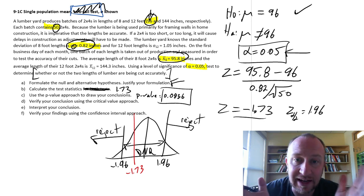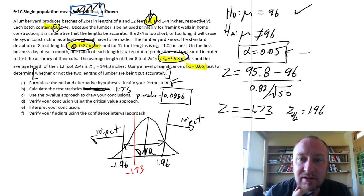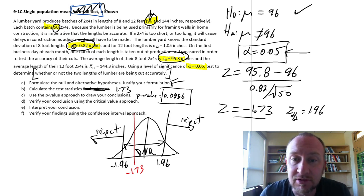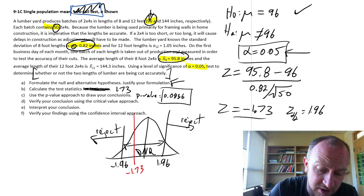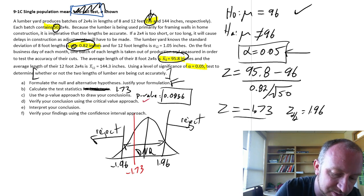And so again, that's consistent with what we found using the p-value approach. And so that's good. We should always get exactly the same conclusion, regardless of which rejection rule we apply. P-value or critical value. So good. We got that.